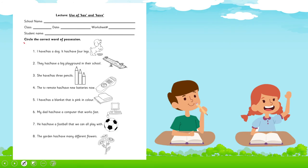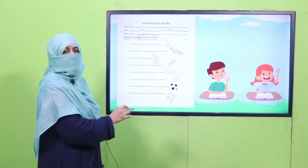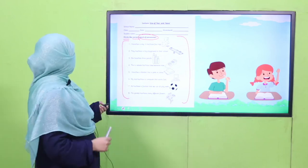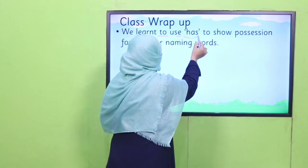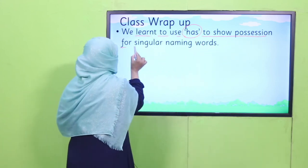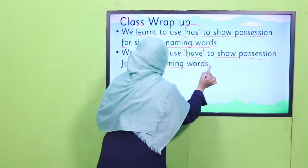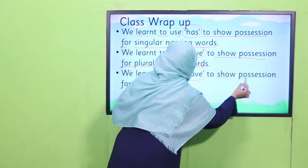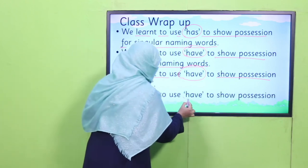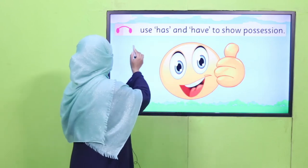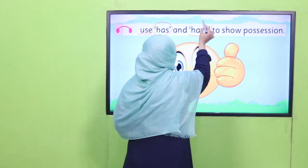And my dear students, what you are supposed to do? Circle the correct word of possession. Here is the sentence and there are two options — has and have — given. You have to circle the correct option according to the sentence. Hope you will enjoy it. Also color this worksheet. What we have learned so far: we learned to use has to show possession for singular naming words, and we learned to use have to show possession for plural naming words, for you, and for I.